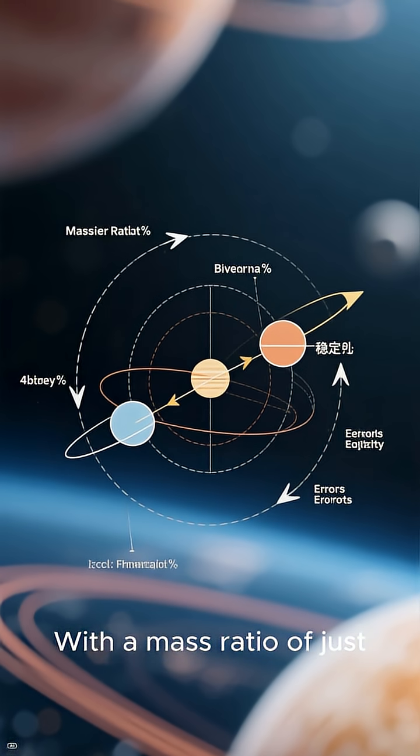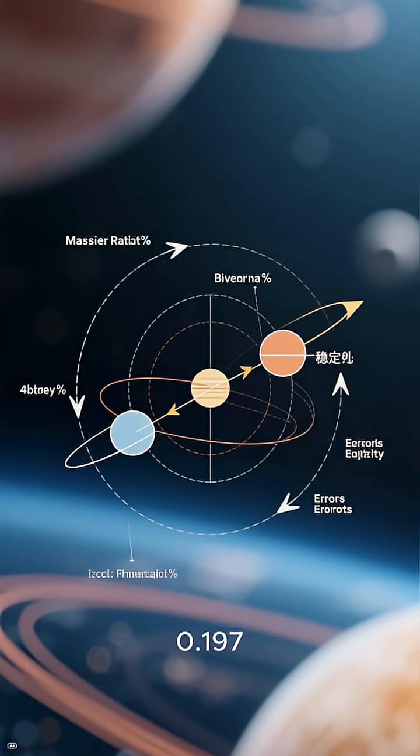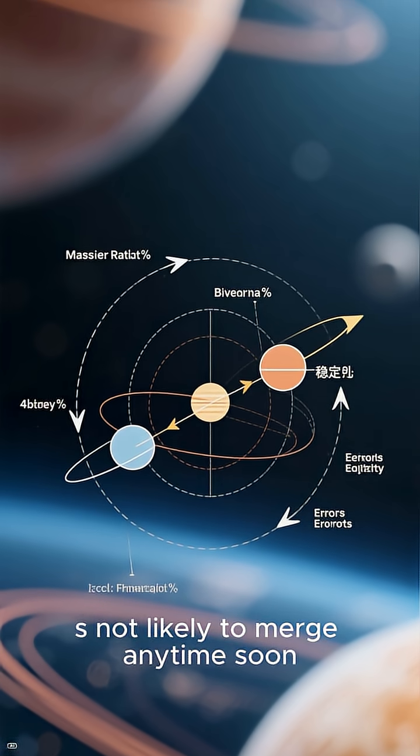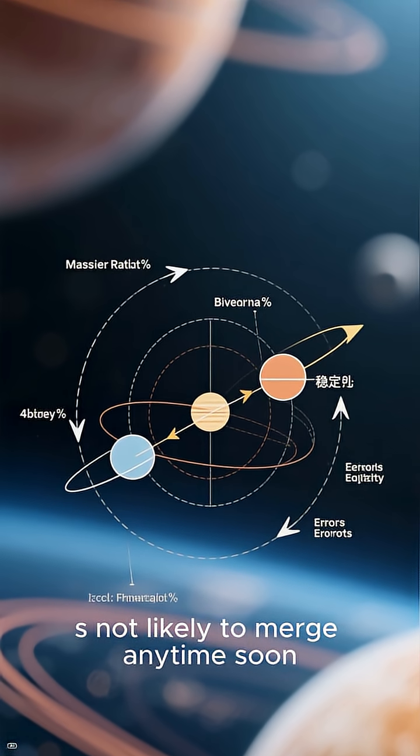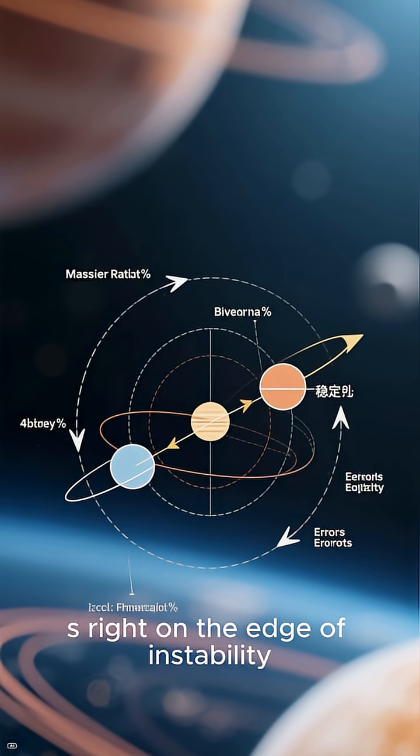With a mass ratio of just 0.197, the system is considered stable, meaning it's not likely to merge any time soon, but it's right on the edge of instability.